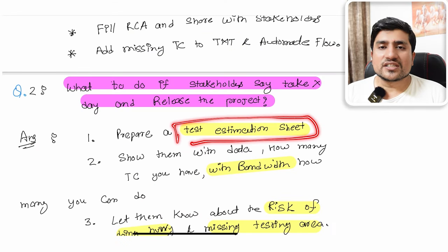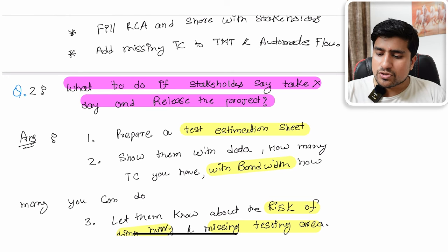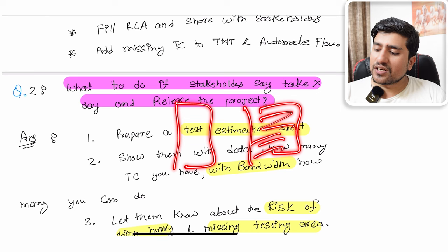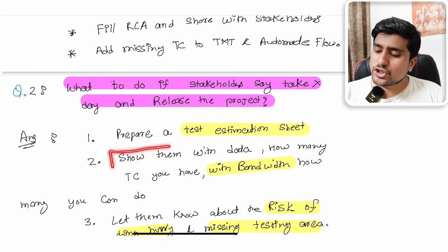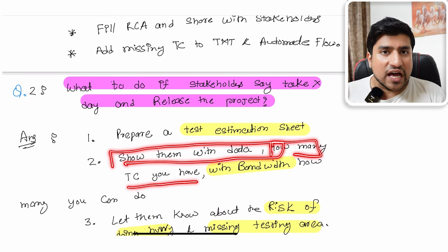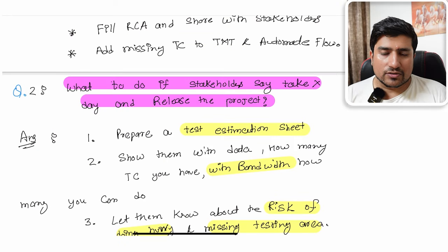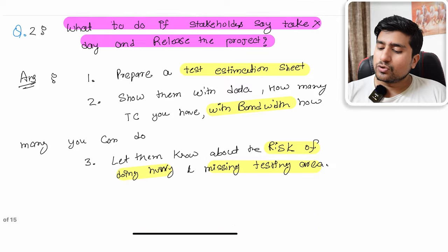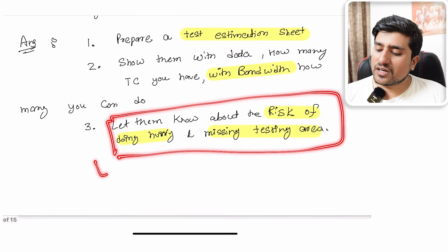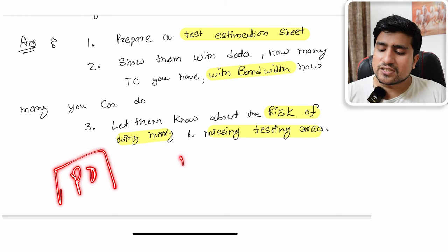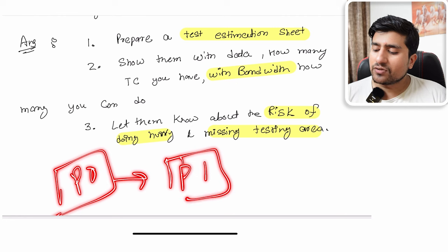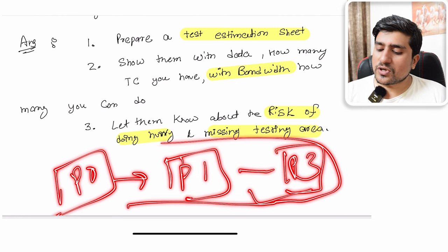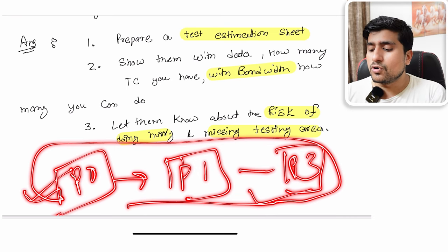If you haven't prepared a test plan, you can create columns in your estimation sheet listing the modules and the time each will take. Showcase with data how many test cases you have and what the bandwidth required is. Create a module-wise breakdown with the number of days or hours it will take to test. Present this to your module owners and let them know there is a risk involved. Make sure you are testing P0 scenarios first, then P1, then P3.